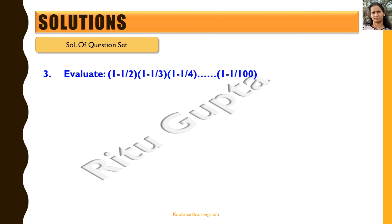The third question asks us to evaluate the expression: (1 − 1/2) × (1 − 1/3) × (1 − 1/4) × ... × (1 − 1/100). At first glance this looks like a large number of multiplications requiring us to multiply all the numerators and all the denominators, but let's see how to do it in a simpler way.